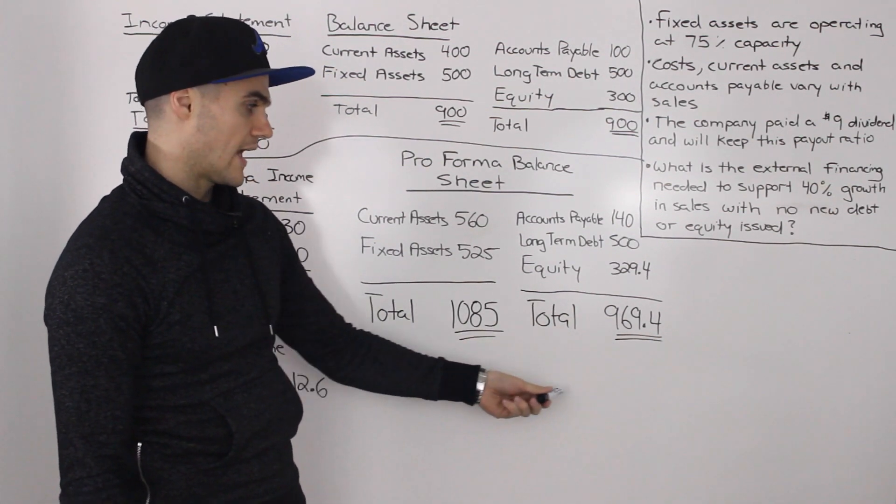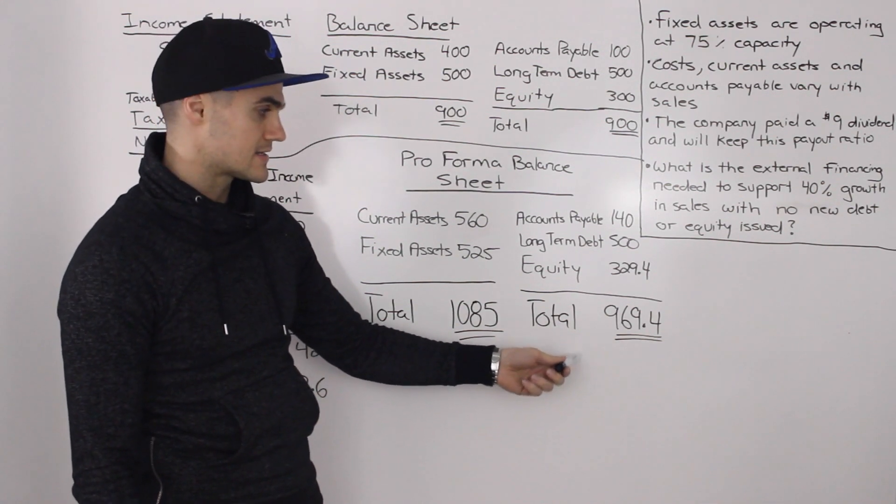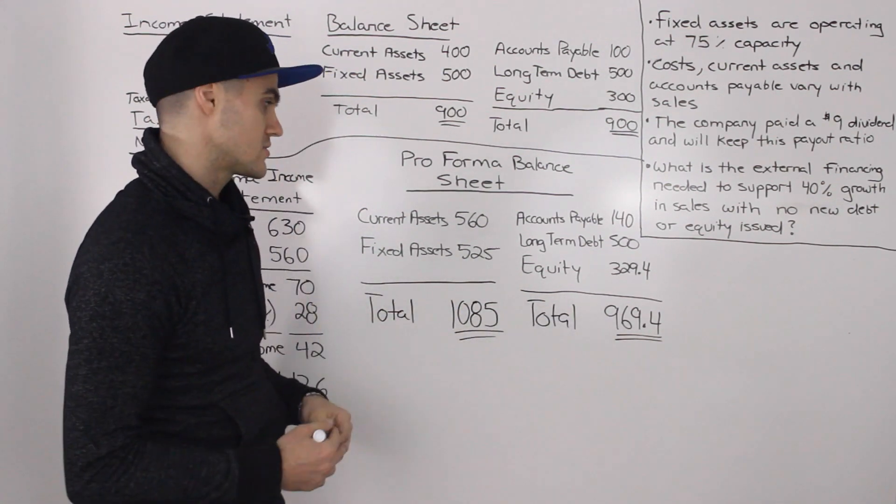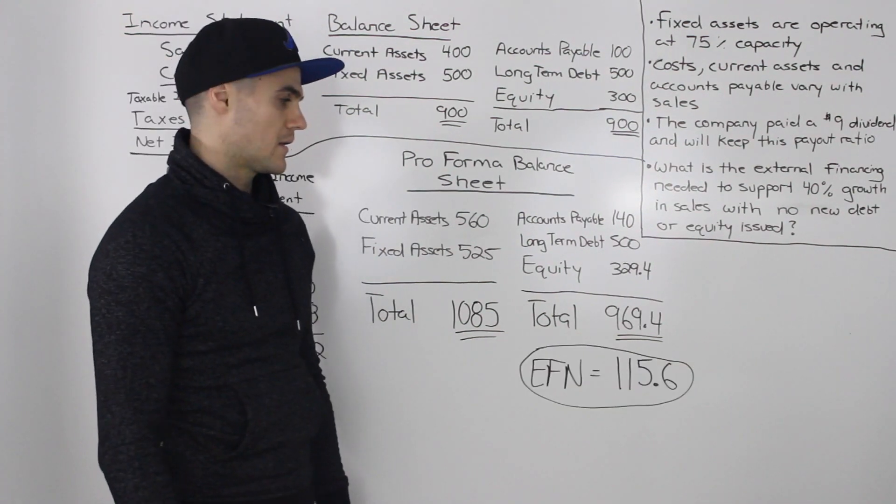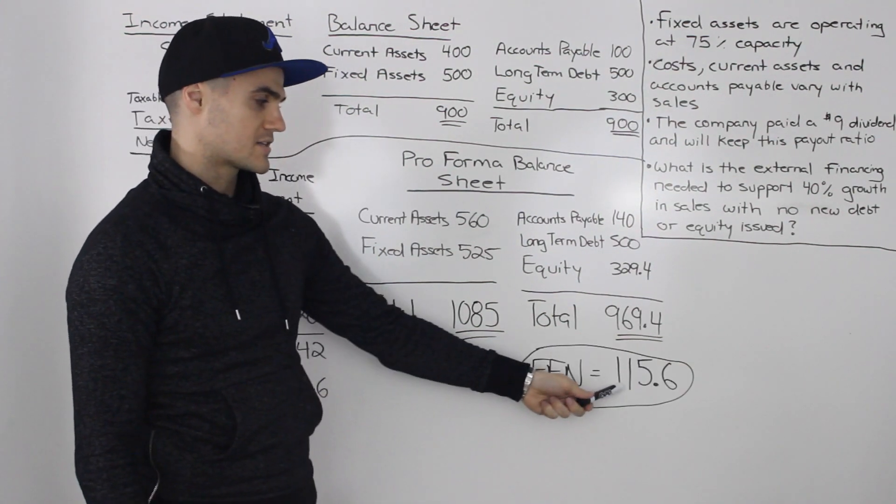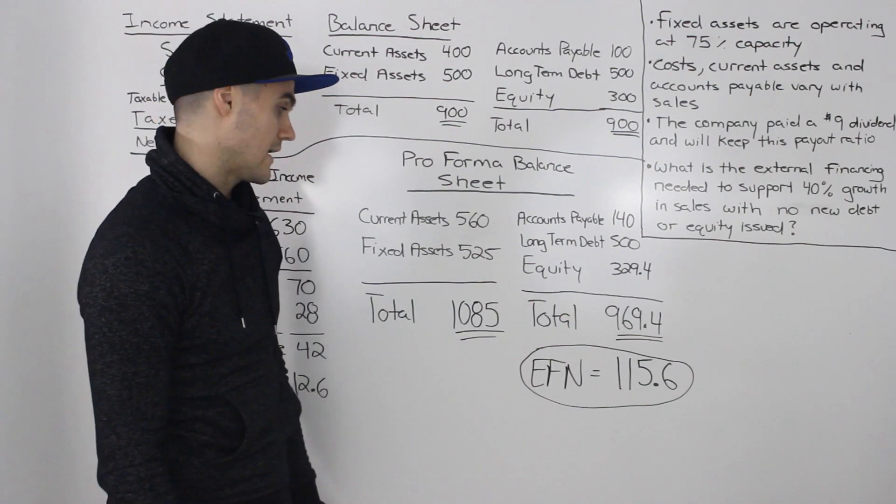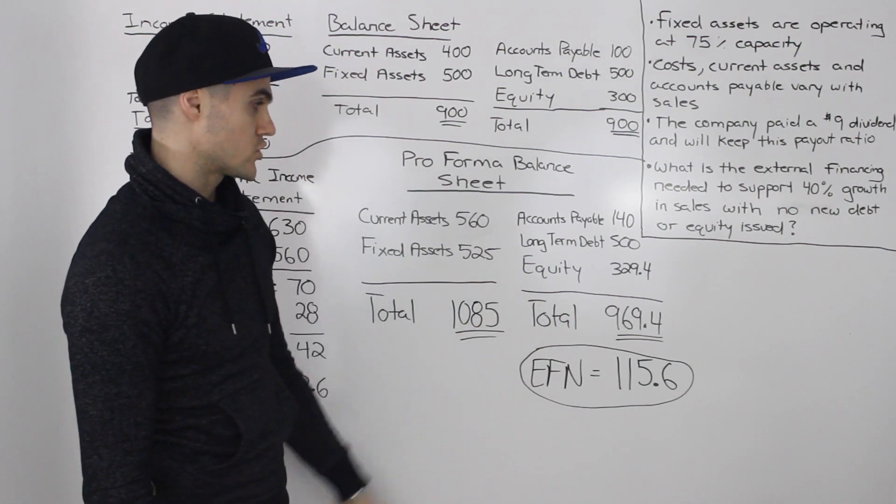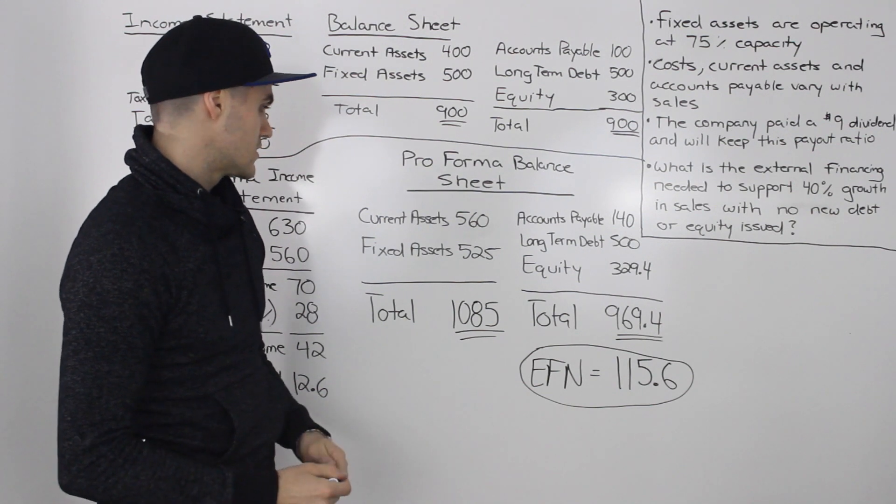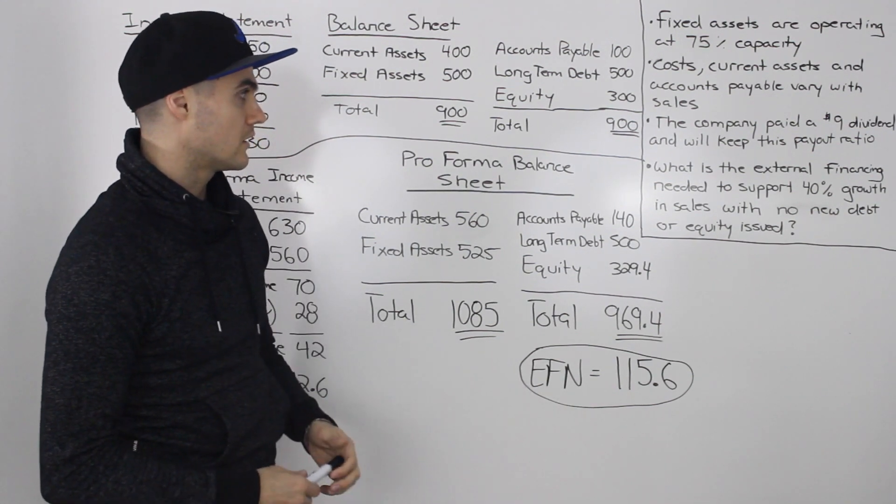So we're going to have to get some kind of external financing on this right side in order for both sides to balance. And the specific amount we need for external financing is 115.6 for both sides of the balance sheet to balance. And I got that by just subtracting the totals. So that there is our final answer.